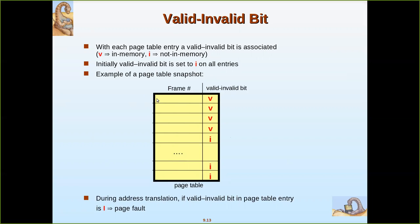When a page is accessed, it is checked with this bit to see if the page is available in a particular frame in main memory. Frames relate to main memory. Whenever a new page is brought into main memory, it is placed in a frame and the respective frame number is updated in the page table. When the frame number is not there and this bit is I, it means the page is not in the frame. Initially, all bits will be I because the user process is not loaded into main memory.